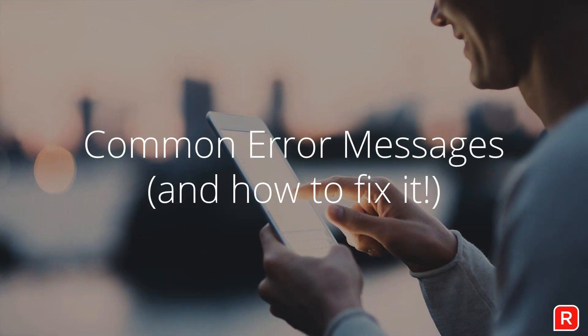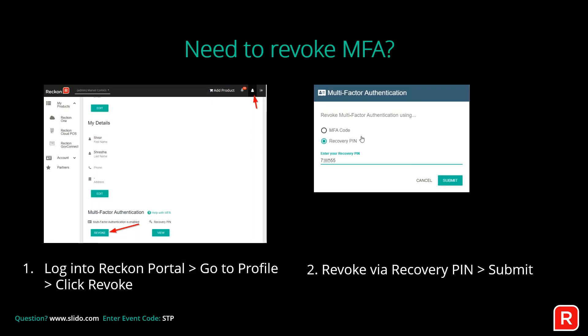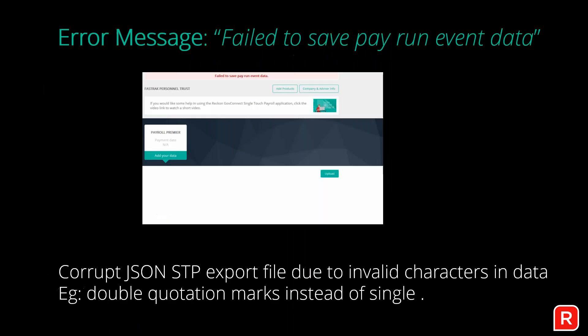Now for common errors. If you need to revoke MFA — say you've lost or broken your phone — log into the Reckon portal, go to Profile in the top right, and under the Multi-Factor Authentication section click 'Revoke.' Enter your recovery pin and submit. Another error is 'Failed to Save Pay Run Event Data,' which means the JSON file exported from Reckon Accounts Desktop may have invalid characters — such as weird characters or double quotation marks instead of single.